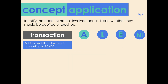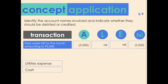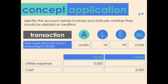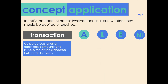Transaction five: paid water bill for the month amounting to 5,000 pesos. Accounts affected: utilities expense and cash. Assets decrease by 5,000 due to the cash payment while net income also decreases by the same amount due to the increase in expense. The increase in expense means it should be debited while the cash payment means cash should be credited.